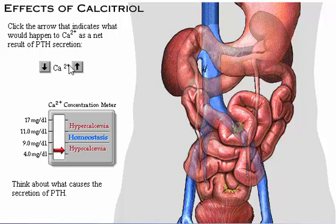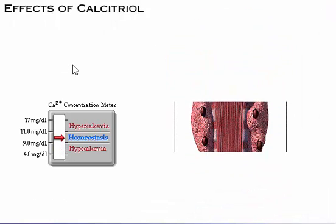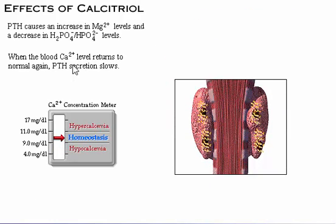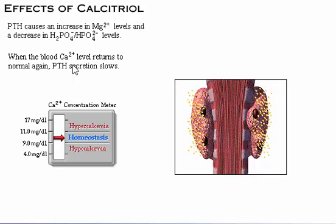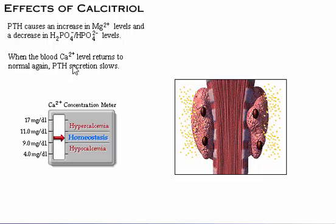Parathyroid hormone secretion is triggered by low plasma calcium. As a net result, plasma levels of calcium increase to normal. When the plasma calcium level returns to normal, parathyroid hormone secretion slows, which is the final step in this negative feedback loop.